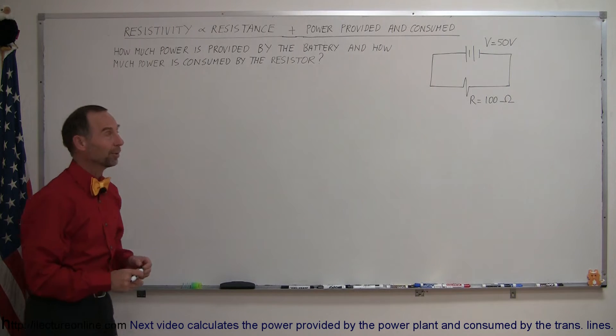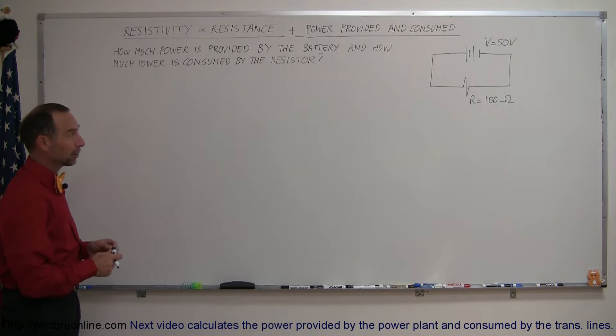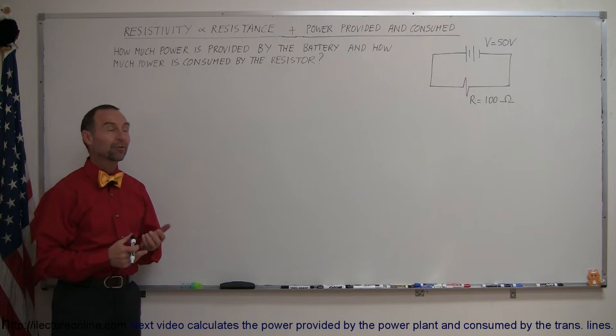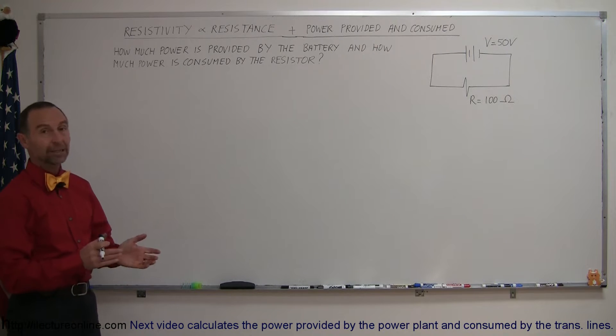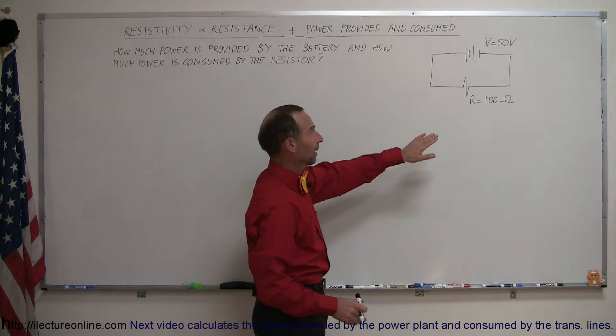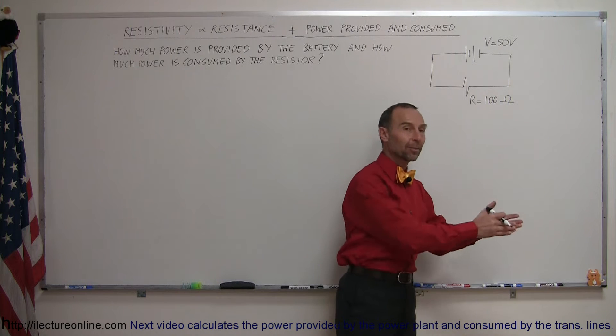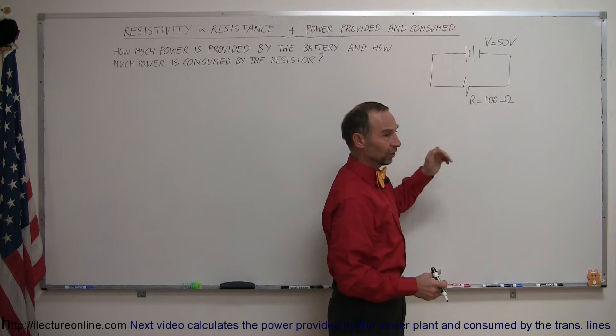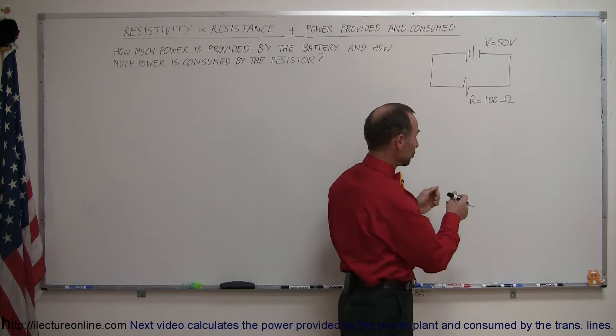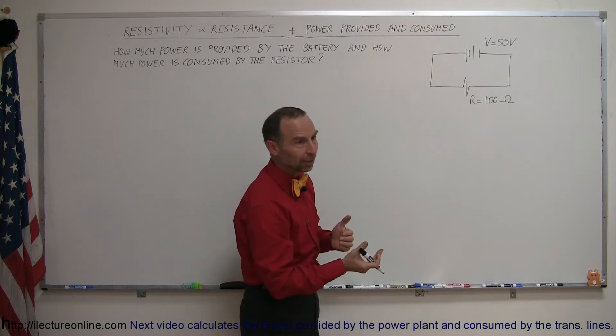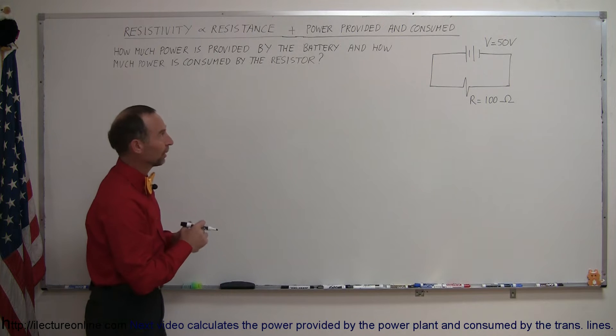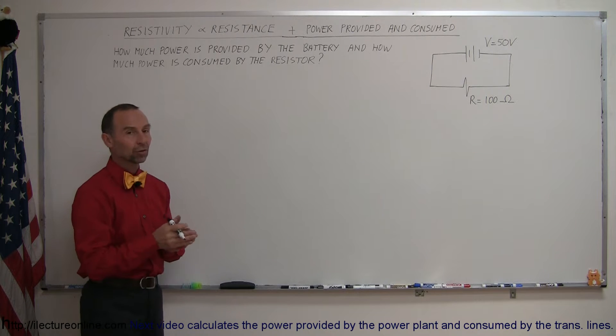Welcome to iLecture Online and here's an example on how we calculate the power consumed and provided in circuits. Typically the battery or the power supply is the device that provides the power, and then resistors and any kind of appliance that you connect onto your power source is going to be the consumer of the power. So therefore we talk about power provided and consumed.